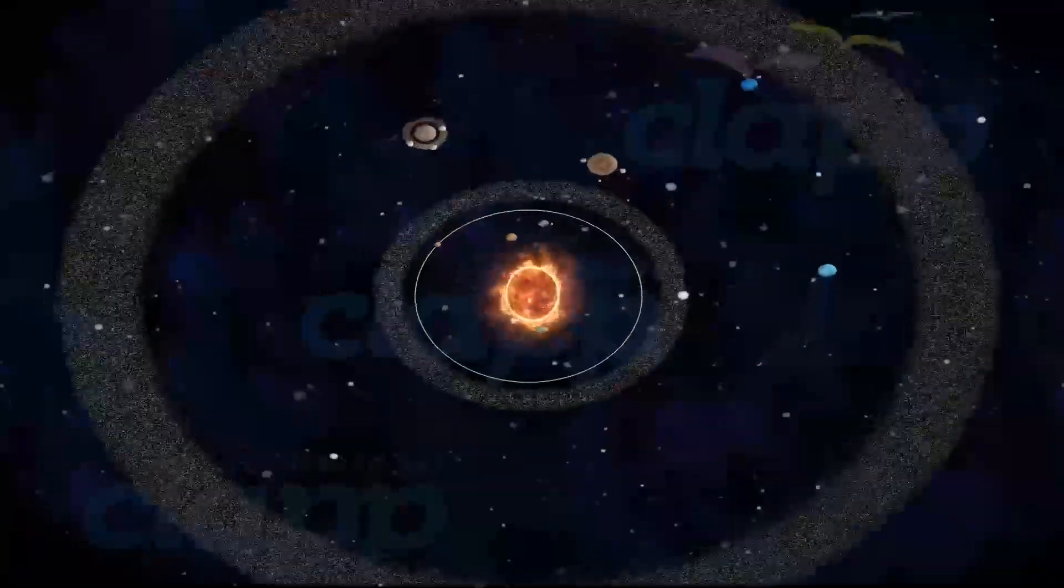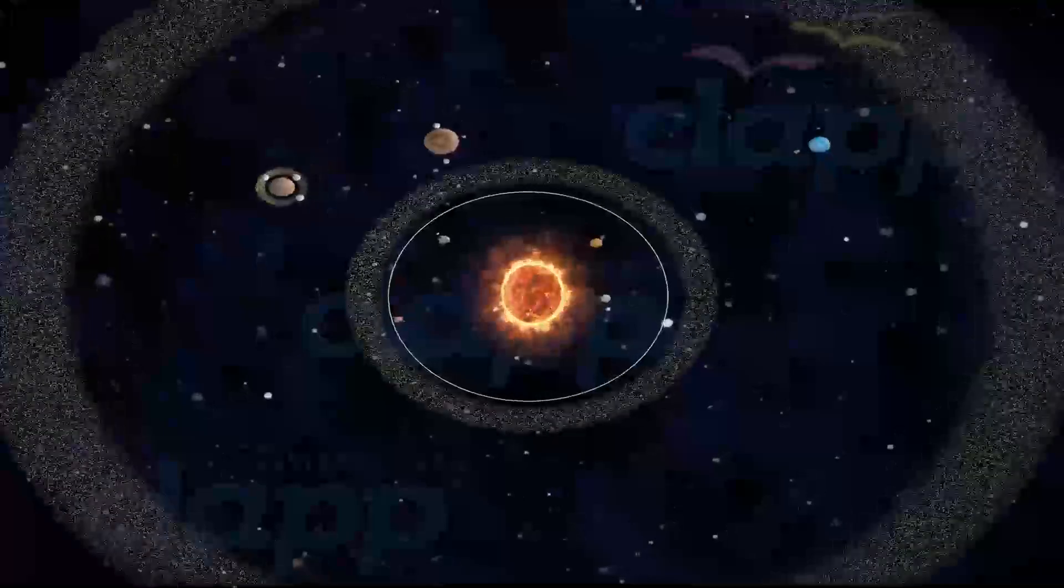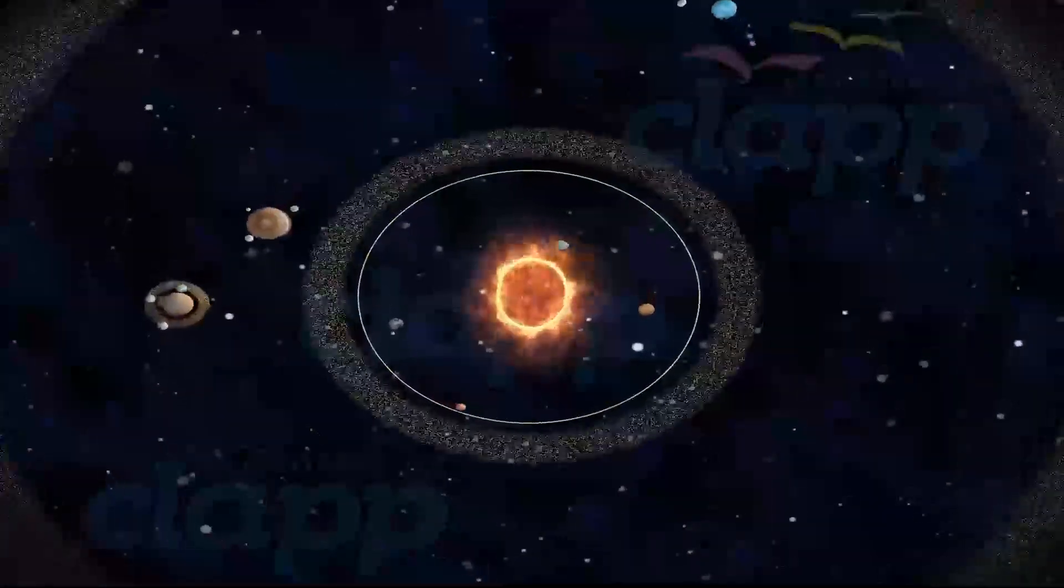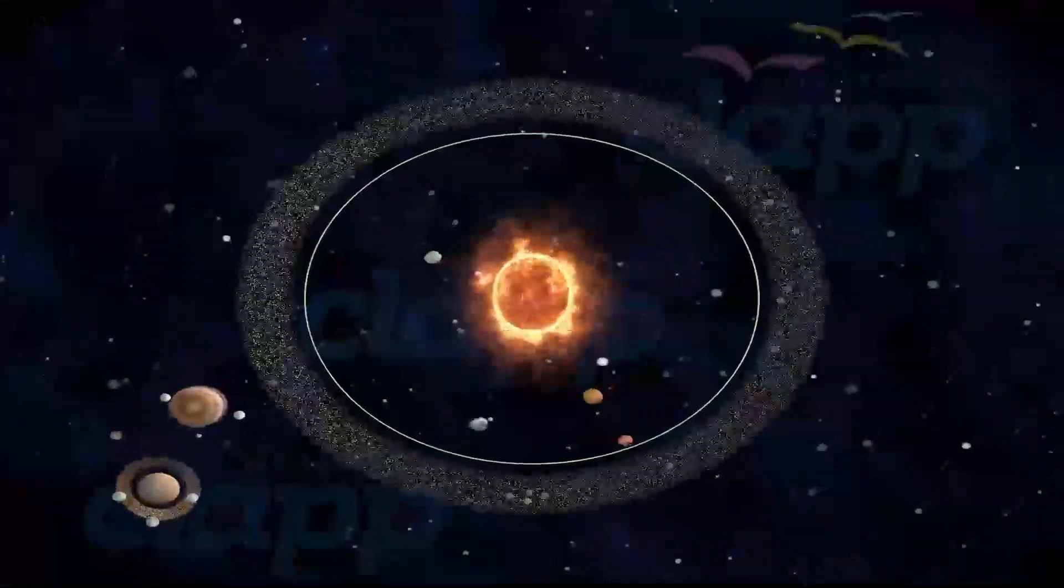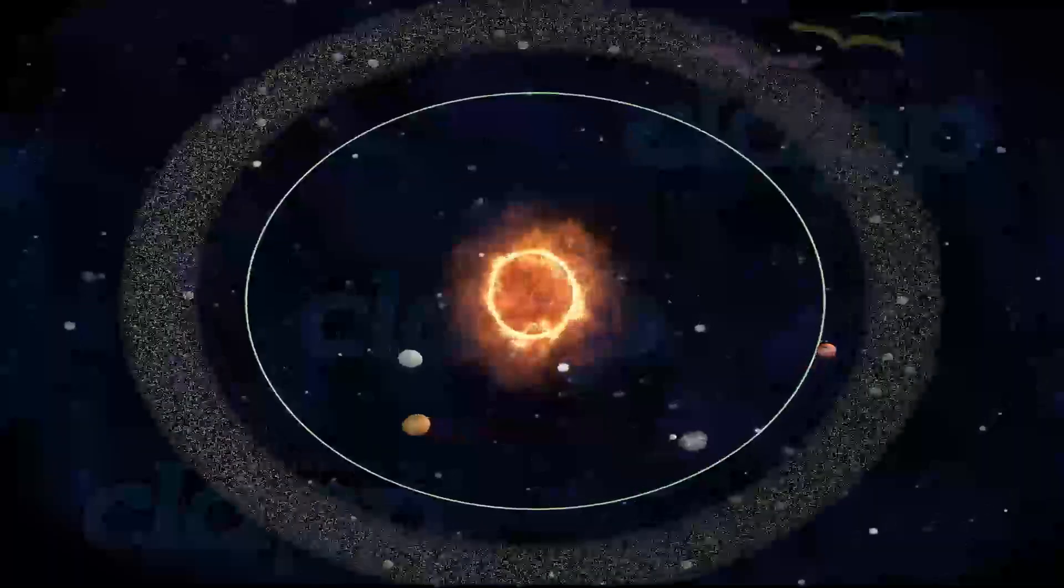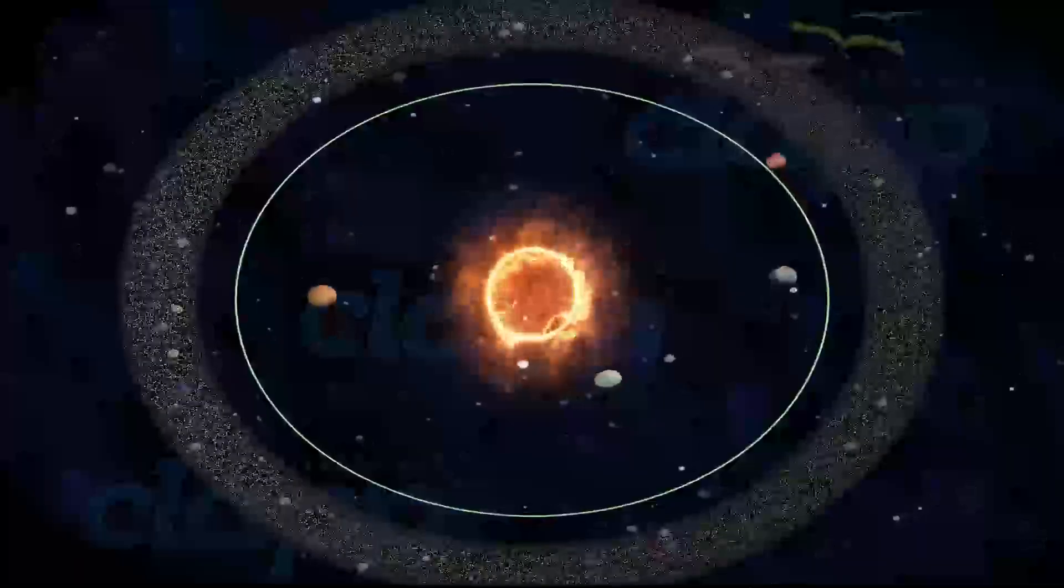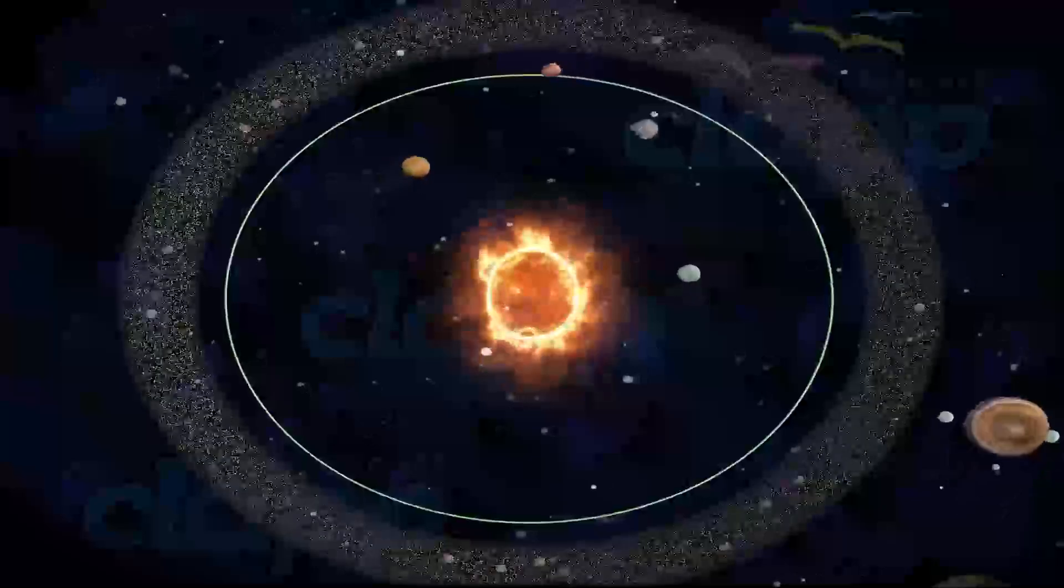Since Mars travels in an elliptical orbit around the Sun, its distance from the Sun varies from 206.7 million kilometers to 249.2 million kilometers.